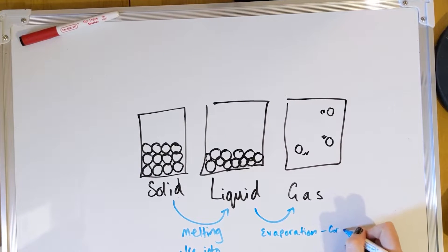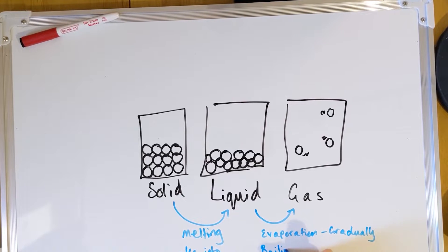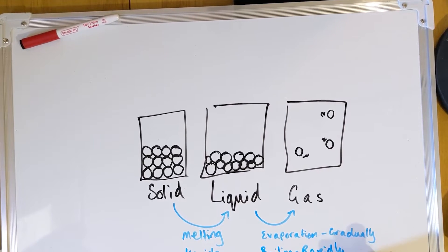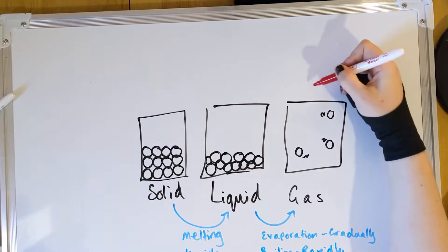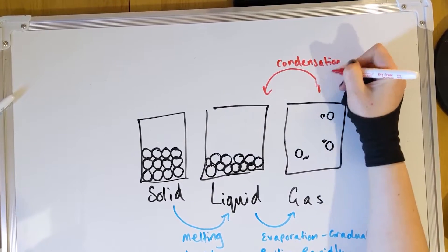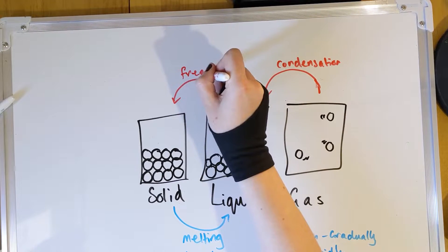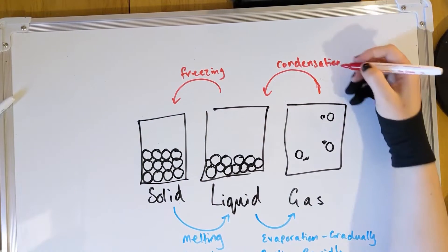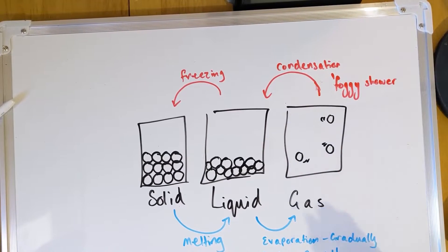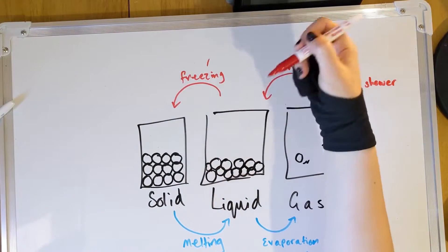Evaporation is when it happens gradually — think of a puddle on a hot day. You've also got boiling, where this happens rapidly, like a pot of water on your stove or your kettle. Going the other way, from a gas to a liquid is condensation — think of a foggy mirror after a bath or a shower, or breathing on a window on a cold day. Going from a liquid to a solid is freezing — just think of it as the other way around, water turning into ice.